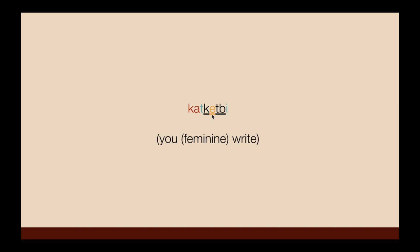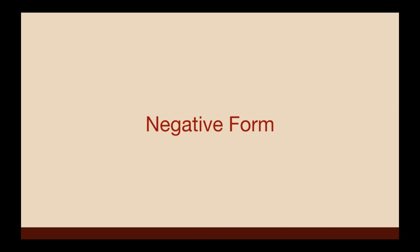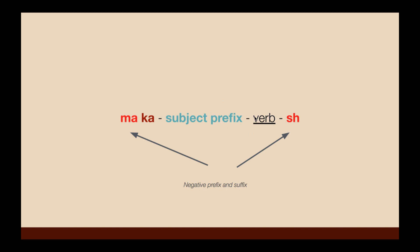Again, because we added a vowel, we switched the position of the vowel — because we added it to the end of the verb. So it's katb, katb, kat-ktb, kat-ktb. The full paradigm uses the present particle 'ka' throughout.